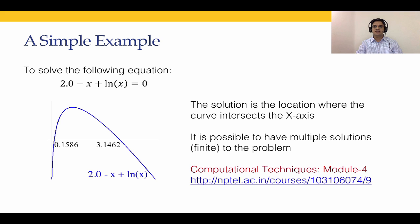Unlike the linear equations case — where if matrix A had full rank we have only a unique solution — in nonlinear equations we can have a finite number of multiple solutions. Recall that in linear equations, whenever we had multiple solutions we had an infinite number of them. That is one key difference between the linear and nonlinear equations cases.